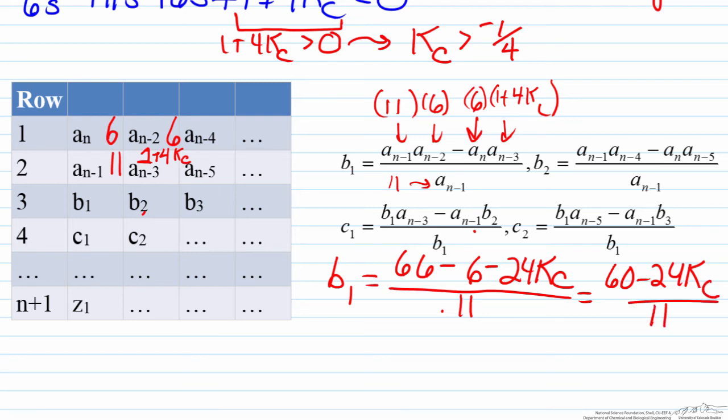For b₂ we don't have enough coefficients in our characteristic equation, so a_(n-4) and a_(n-5) are both zero. Therefore b₂ is zero. This means the only other constant we have to look at is c₁. For c₁, b₂ is zero, meaning the second term goes to zero. The b₁'s cancel, and all you are left with is a_(n-3), which is 1+4KC.